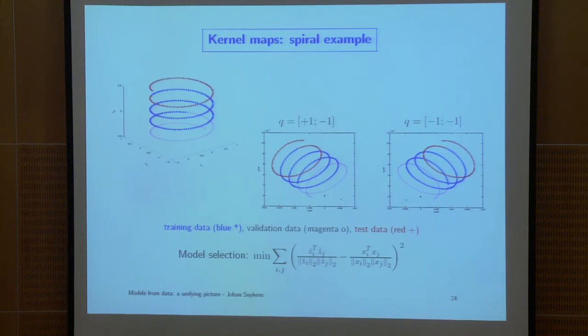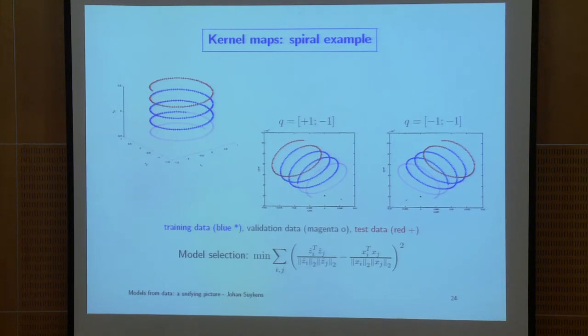The data, shown on the left, is a three-dimensional spiral. We divide it into a training, a validation, and a test set. The blue part is the training part — the only data used for solving the linear system. The other parts are validation and test.